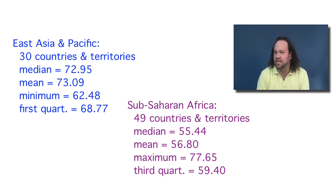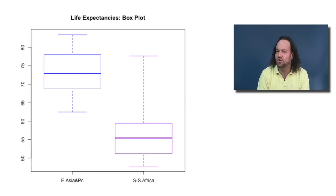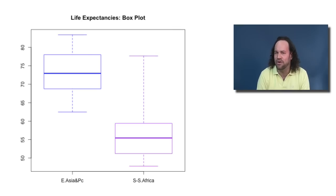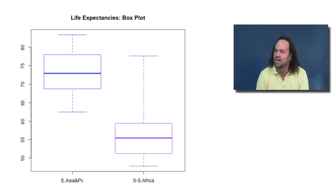We can see this more clearly by making side-by-side box plots for each of the two regions. The box plot for East Asia and the Pacific sits quite a bit higher than the box plot for Sub-Saharan Africa. This confirms that for the most part, life expectancies in East Asia and the Pacific are indeed higher than life expectancies in Sub-Saharan Africa.